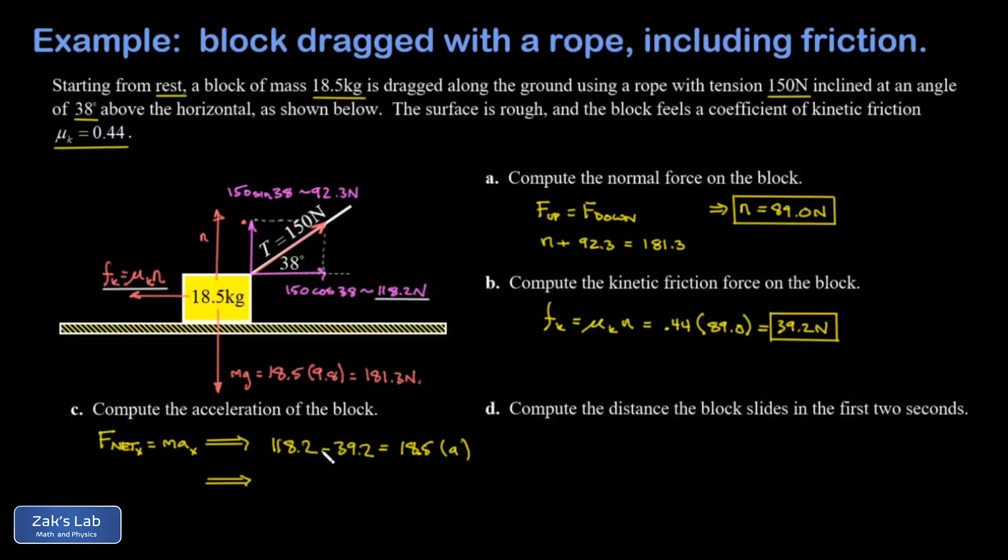This gives us about 4.27 meters per second squared. Finally in part d we're going to combine this acceleration result with our knowledge of kinematics and we're asked to get the distance the block slides in the first two seconds of this motion.